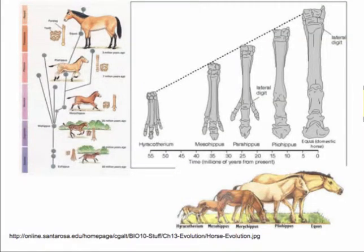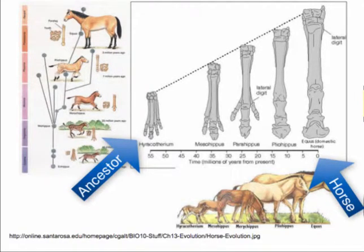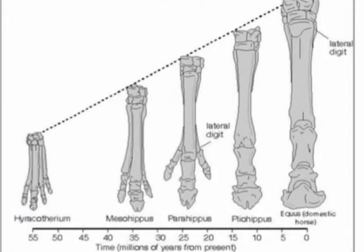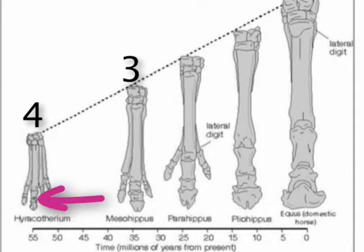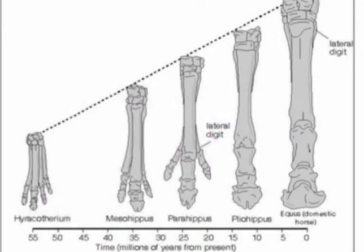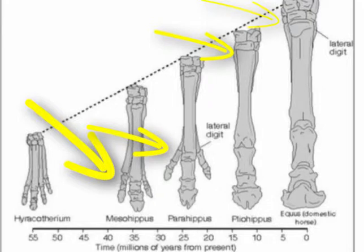If we look at the horse, we actually do see this change — specifically in the toes. Looking at the common ancestor, this much smaller organism from 55 million years ago, we can clearly see four digits. As we trace the intermediate fossils, we see that decreasing from four to three. Then the medial digit — the one in the middle — starts getting larger and larger, becoming today's hoof. The lateral digits get smaller, and even today we see remnants of those lateral digits that once existed more completely in the common ancestor.